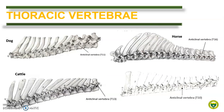For the thoracic vertebrae, we can compare them as a whole. In dog, the first spine is the tallest and the spinous processes gradually decrease in length throughout the whole thoracic region. As a review, the most vertically oriented spinous process of the thoracic vertebra is called the anticlinal vertebra. In the case of the dog, the 11th thoracic vertebra is the anticlinal.